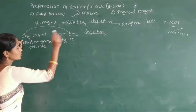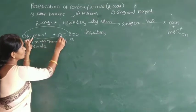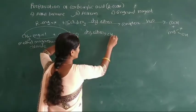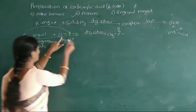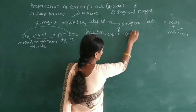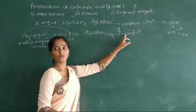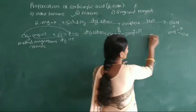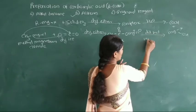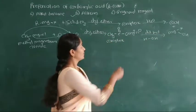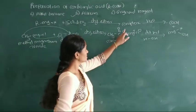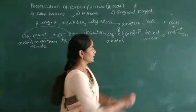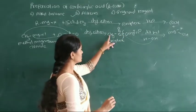The methyl group adds to the carbon of CO2 and MgCl attaches to one of the oxygen atoms of this CO2 group. Here formation of CH3COO⁻MgCl — this is a magnesium salt of acid complex. And this complex, on acid hydrolysis in the presence of dilute acid and water, causes breaking of the carbon-oxygen bond and formation of carboxylic acid. The hydroxy group of water adds to the carboxylic carbon, giving formation of carboxylic acid.